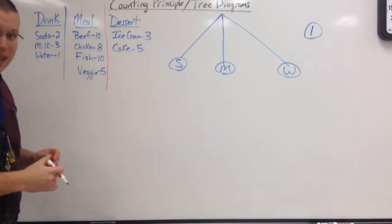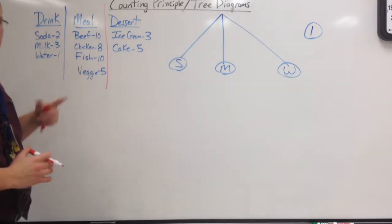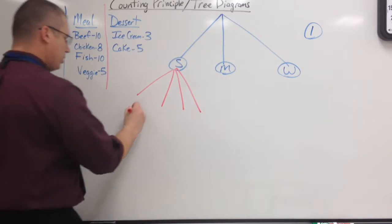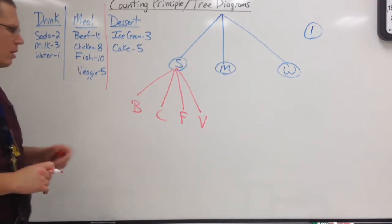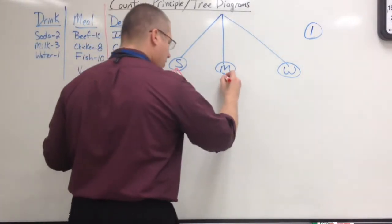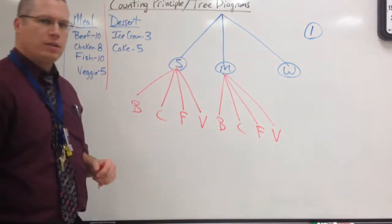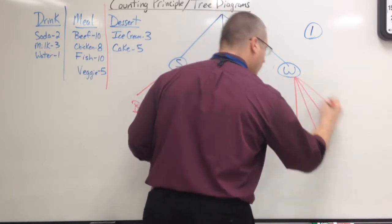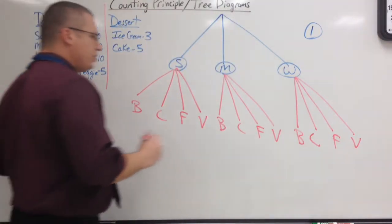Next set of branches is going to be my second option. For every drink I pick, I still could have picked beef, chicken, fish, or veggie. So let's do this. One, two, three, four: beef, chicken, fish, veggie. Now those four choices does not matter what drink I had. So if I pick milk, I still have to list those four: beef, chicken, fish, veggie. It doesn't matter if I chose water, I still have those four choices. One, two, three, four: beef, chicken, fish, veggies. That was the second choice.